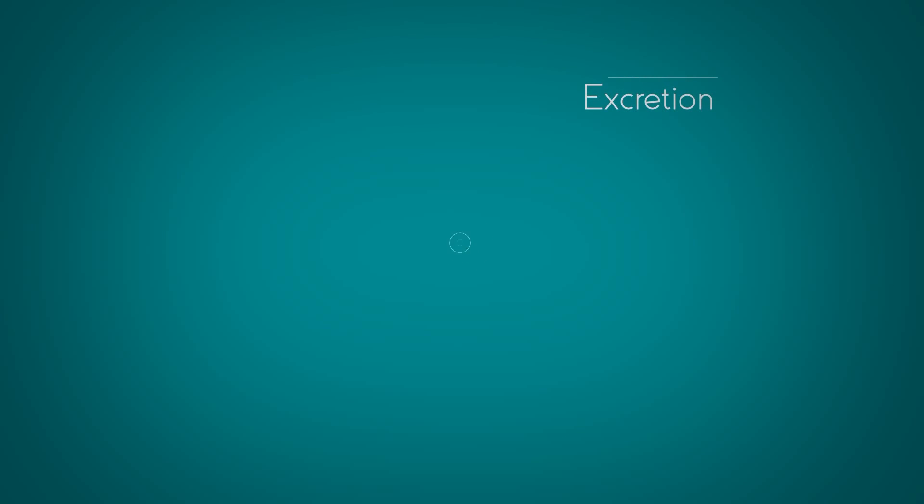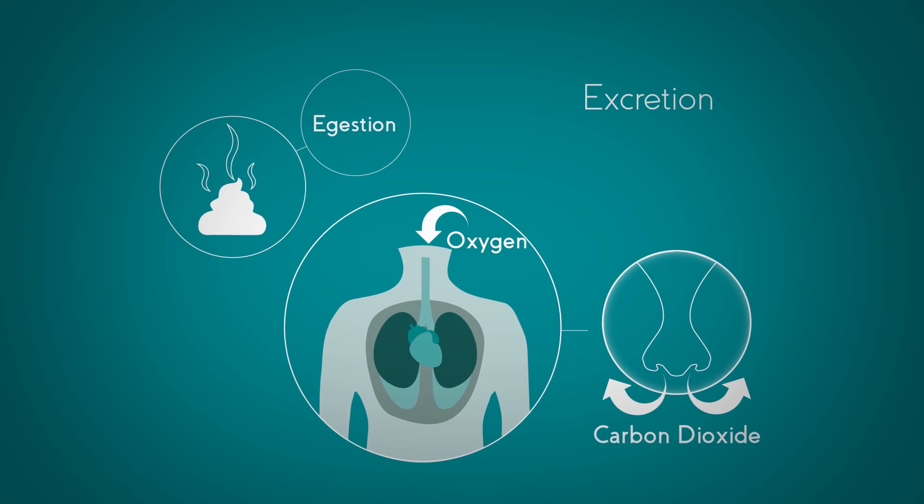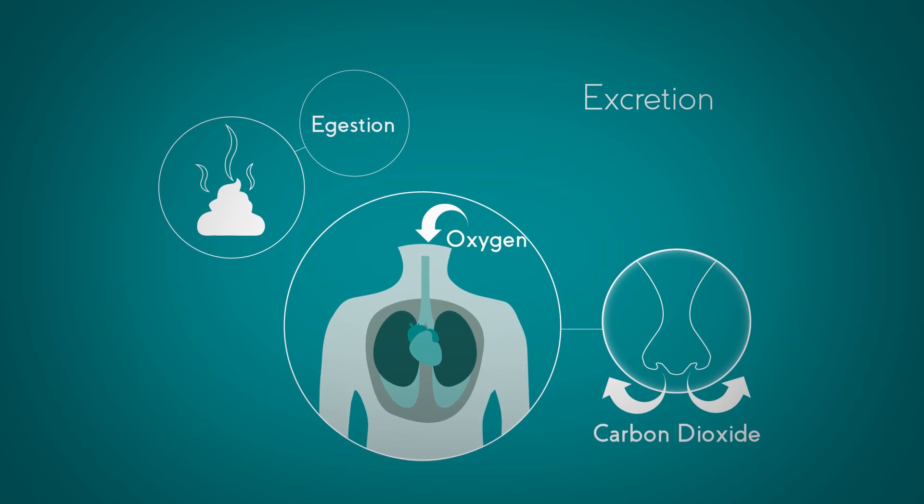Excretion is the sixth process. This is not the same as pooing, which is actually called egestion. But excretion means getting rid of waste from chemical reactions in the organism. Respiration, for example, makes waste products, and each organism needs to get rid of these. This is called excretion.